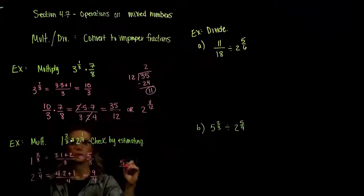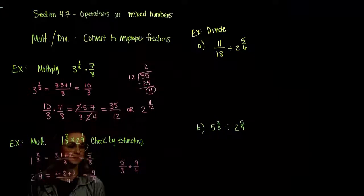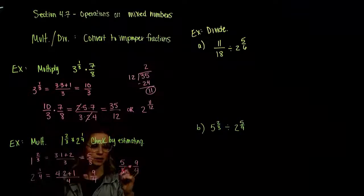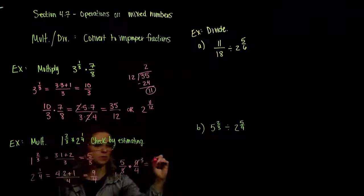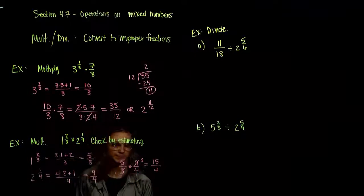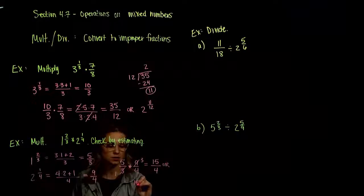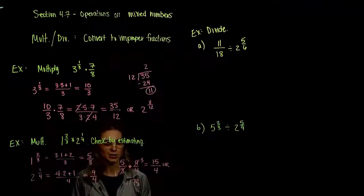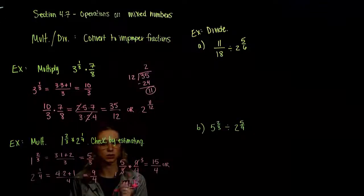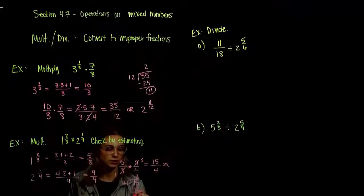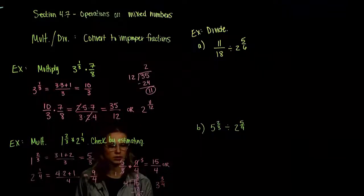Let's multiply five-thirds times nine-fourths. Before multiplying everything together, let's reduce: three goes into three once and three goes into nine three times. Across the top we have five times three, which is fifteen, and one times four on the bottom is four. To convert fifteen-fourths back to mixed: four times three is twelve, four times four is sixteen which is too big, so the greatest number of times it fits is three. Three times four is twelve, a difference of three. So fifteen-fourths is the same as three and three-fourths.